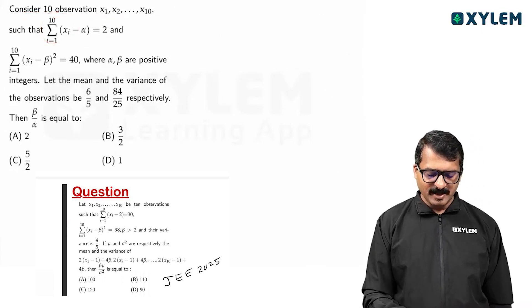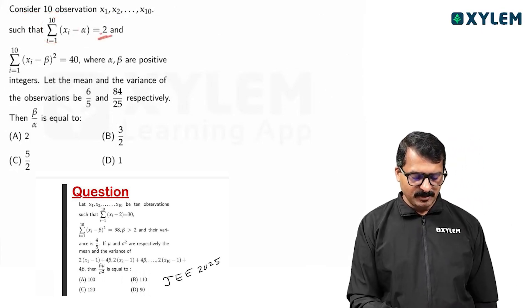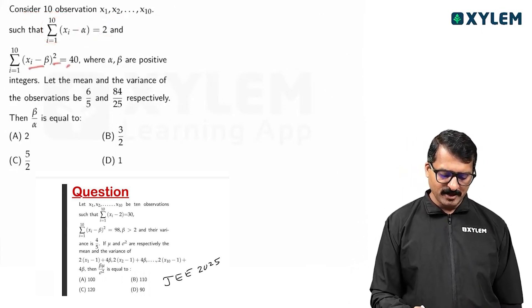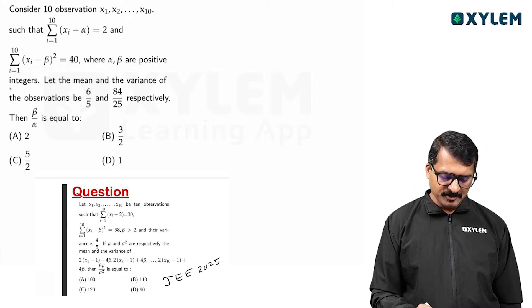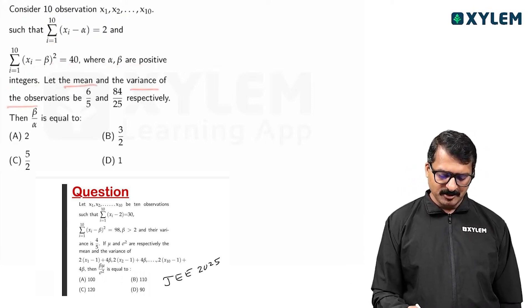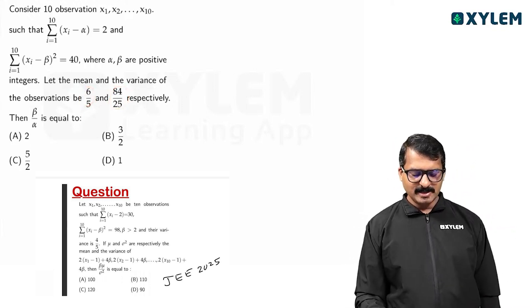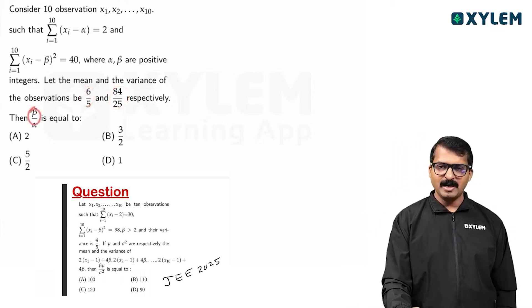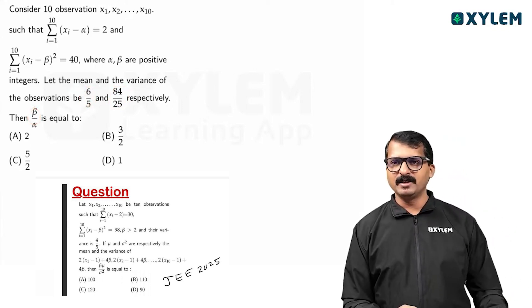Consider 10 observations such that sigma (xi minus alpha) equals 2, sigma (xi minus beta)² equals 40. Alpha and beta are positive integers. Let the mean and variance of the observations be: mean = 6/5, variance = 84/25. Then beta divided by alpha equals?